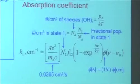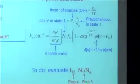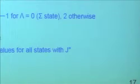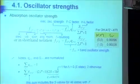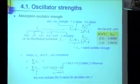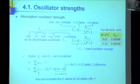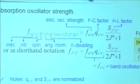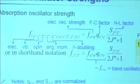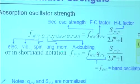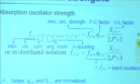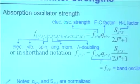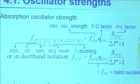Once you've decided which line you're going to look at and found its wavelength, all the work is in the Boltzmann fraction and the oscillator strength. If I were being complete, I'd write the oscillator strength in terms of all parameters: electronic, vibrational, spin, angular momentum, lambda doubling. But in the end, it's the product of three terms: the electronic strength, the Franck-Condon factor, and the Hönl-London factor.